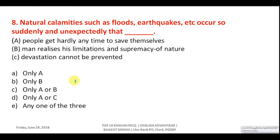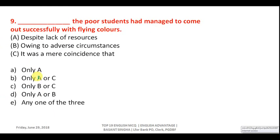Question eight: complete the sentence about natural calamities. Option A: 'Natural calamities such as floods, earthquakes occur so suddenly and unexpectedly that people get hardly any time to save themselves' — correct. Option B: 'Man realizes his limitations and supremacy of nature' — seems out of context as we are not talking about limitations when something happens unexpectedly. Option C: 'Devastation cannot be prevented if something happens suddenly and unexpectedly' — also correct. Answer is D, meaning A or C.